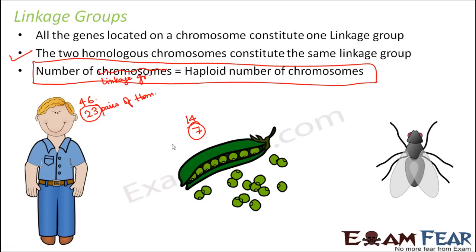If you consider Drosophila, which was used by Morgan in his experiments, they had four pairs of chromosomes. Therefore, four linkage groups are present in Drosophila.